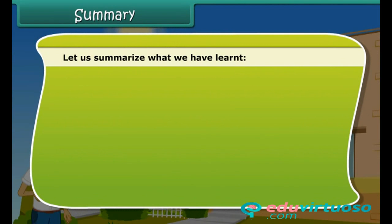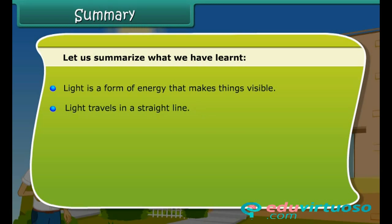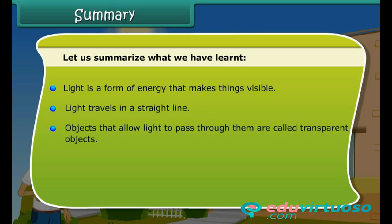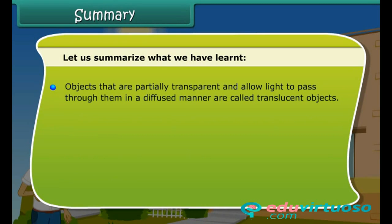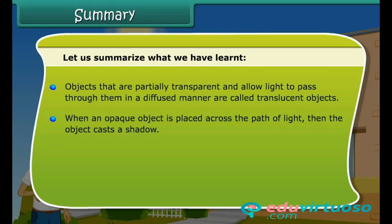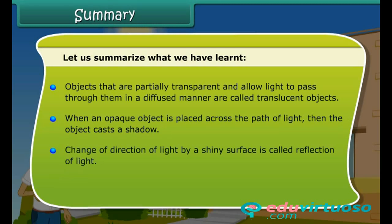Let us summarize what we have learned. Light is a form of energy that makes things visible. Light travels in a straight line. Objects that allow light to pass through them are called transparent objects. Objects that do not allow light to pass through them are called opaque objects. Objects that are partially transparent and allow light to pass through in a diffused manner are called translucent objects. When an opaque object is placed across the path of light, the object casts a shadow. Change of direction of light by a shiny surface is called reflection of light.